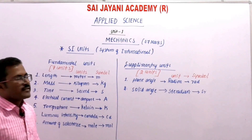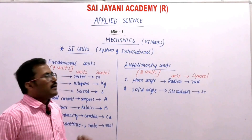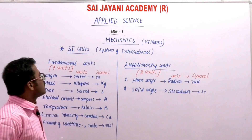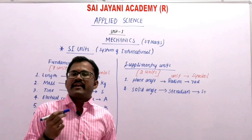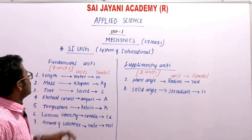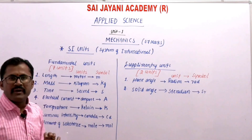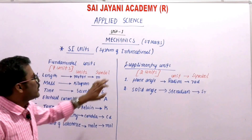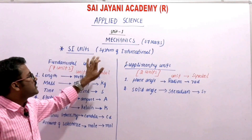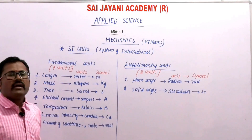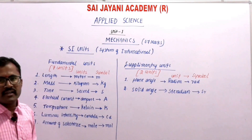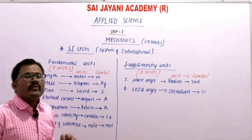Next concept: SI units. SI units means System of International units. The unit is now internationally followed. So these are universally accepted units. There are seven fundamental units in the SI system and two supplementary units in the SI system.